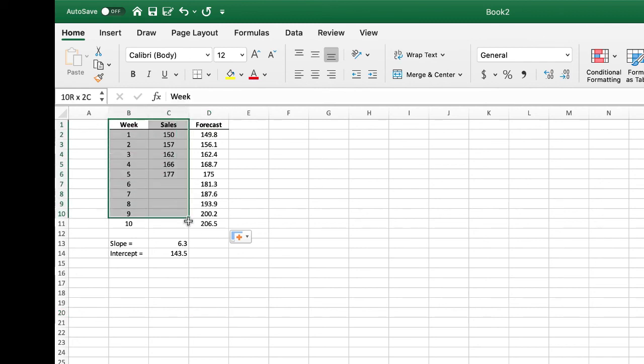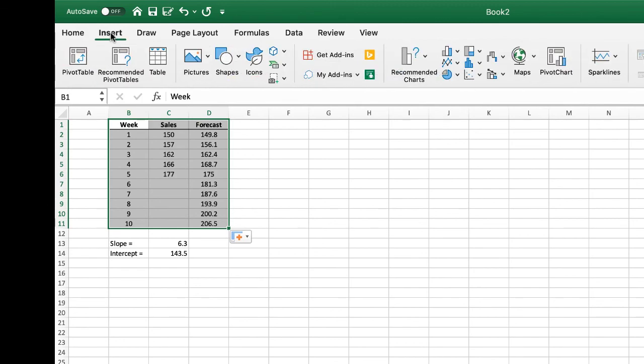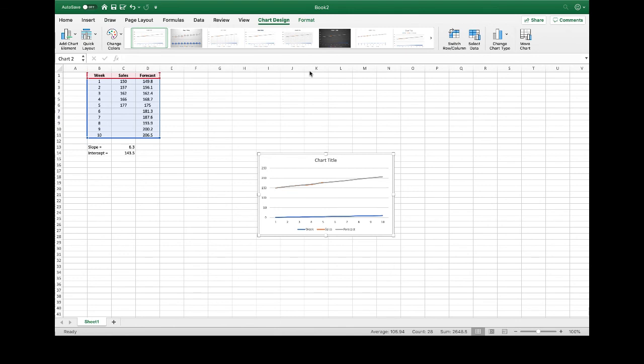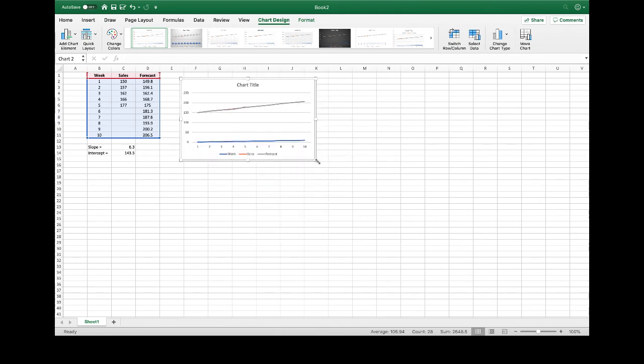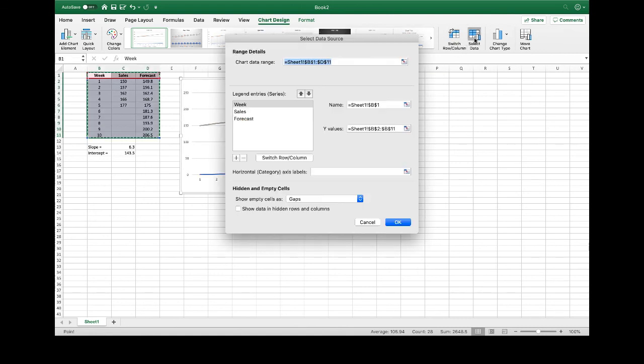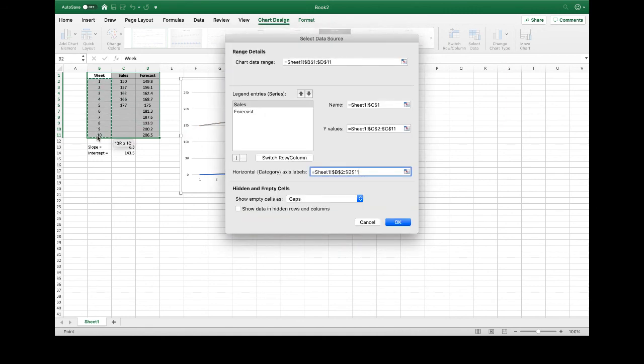We can graph this as well to see how it's working. Highlight all the data, insert, select a line chart. We'll do the 2D line chart and move it into an easier to see position, make it a little bit bigger. We got to adjust the data. We can select on the data. We don't want to see the weeks forecast, so we'll drop that. But we do want the weeks to be the labels for the x-axis. So we'll highlight this. And there we go.